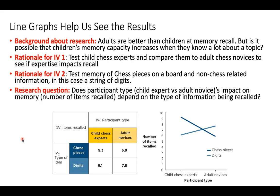Let's dive right into an example. This experiment has two independent variables, each with two levels — just our basic, simple two-by-two factorial design. The focus of the research is memory — that's our dependent variable — items recalled, meaning the number of items remembered.